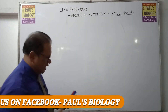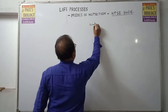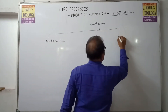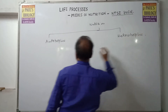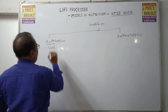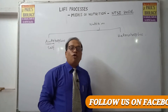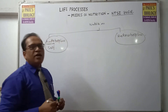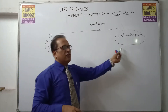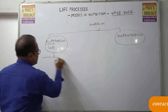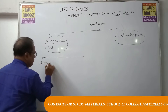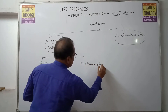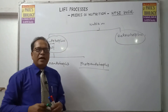Nutrition is basically of two types. One is autotrophic nutrition and another is heterotrophic nutrition. Auto means self, so autotrophic means those organisms which can produce their own food. Heterotrophic means those who cannot produce their own food. Autotrophic nutrition is further of two types: one is chemo-autotrophs and another is photo-autotrophs. Photo-autotrophs are plants that produce food by photosynthesis.